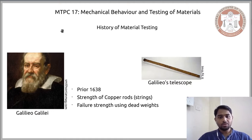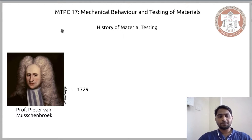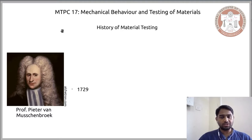Following Galileo's search for the strength of copper rods using simple dead weights, we had to wait close to 100 years — a century — until the next researcher who worked extensively on testing of materials came along. That researcher is Professor Peter Van Muschenbrook. Like many researchers back then, he was a mathematician and was also involved in medicine and astronomy to some degree. In his research, he not only built a machine for testing of materials, but also conceived different forms of testing.